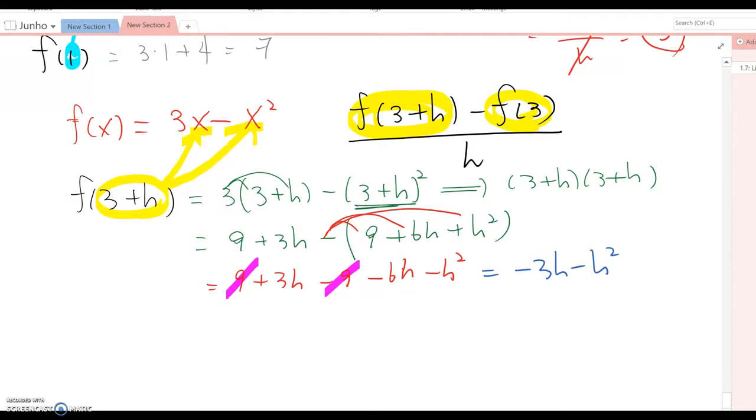Next we need to find out f(3). f(3) equals 3 times 3 minus 3 squared, which means 9 minus 9 equals 0.